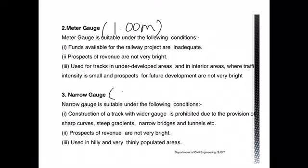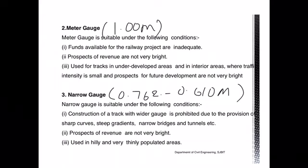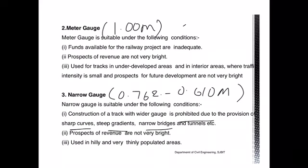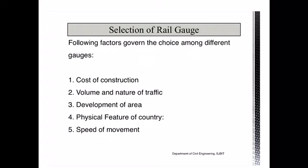The narrow gauge has width restrictions of 0.762 to 0.610 meters. It is provided only when there are constructional difficulties — where it is not possible to construct meter gauge or broad gauge. Such regions include areas with sharp curves, steep gradients, bridges, and tunnels, where sufficient land width is not available for wider gauge construction. It is adopted only for places where prospective revenues are not bright, especially in hilly and very thinly populated areas.